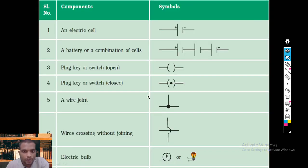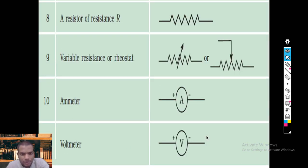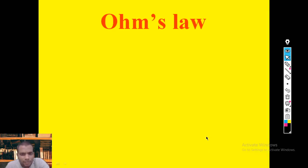In my previous lesson I discussed some electrical circuit symbols: cell, battery, open switch, closed switch, wire joint, crossover joint, electric bulb, ammeter, voltmeter, resistance, and variable resistance or rheostat. These are the symbols we will use to draw circuits. Today I would like to discuss a very important concept in this chapter.